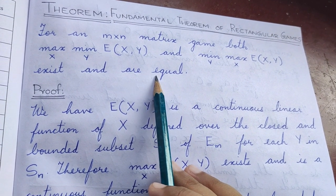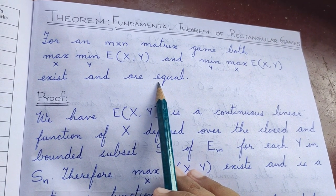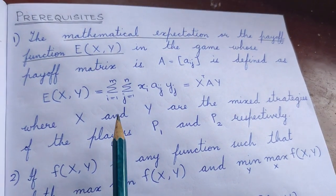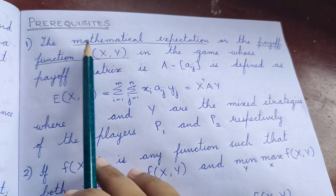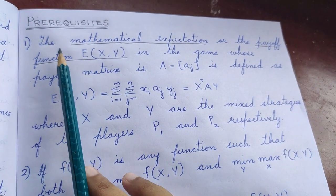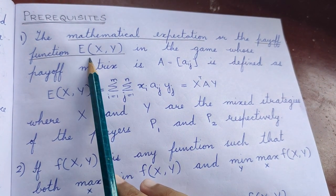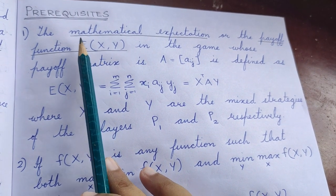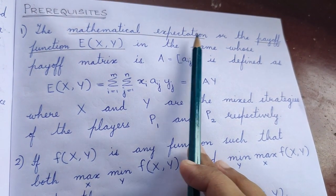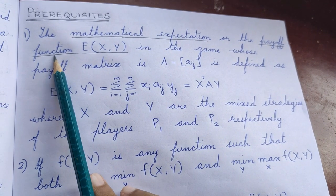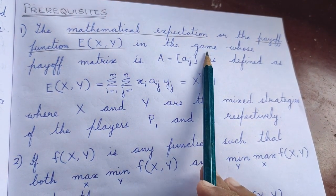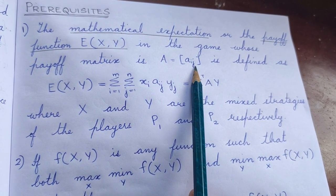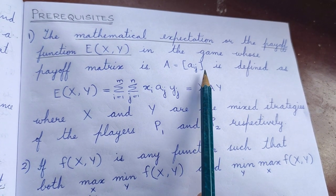Before going into the proof of the theorem, we need to have some prerequisites. So we shall look at what are the prerequisites. First of all, what is mathematical expectation E of xy? It is defined as follows. The mathematical expectation or the payoff function E of xy in the game whose payoff matrix is given by A equal to matrix aij, an m by n matrix.